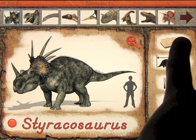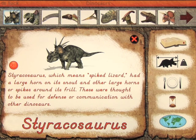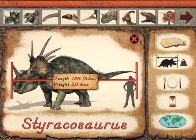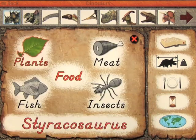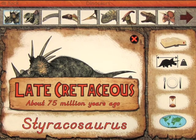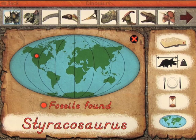On the right hand side, we can pull up different types of information. Styracosaurus, which means spiked lizard, had a large horn on its snout and other large horns or spikes around its frill — these were thought to be used for defense or communication with other dinosaurs. Styracosaurus was 18 feet or 5.5 meters in length and weighed about two tons. It ate mostly plants and lived during the late Cretaceous period. It also shows you where the fossils have been found.